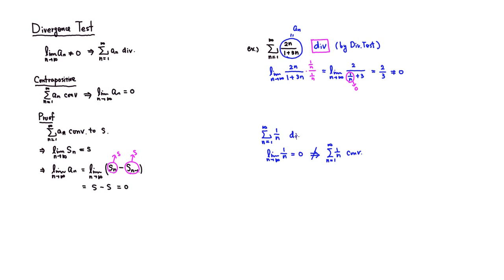The harmonic series is a divergent series — we already checked that. So the harmonic series passes the divergence test in the sense that its limit equals 0, but that doesn't mean it converges — it still diverges. The divergence test does not catch all divergent series. But if the limit of a_n is not equal to 0, then we already know the given series is divergent. That's it — I hope that was clear.